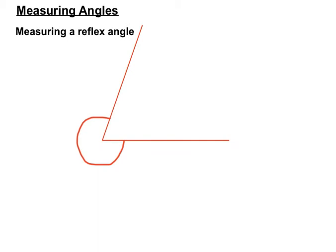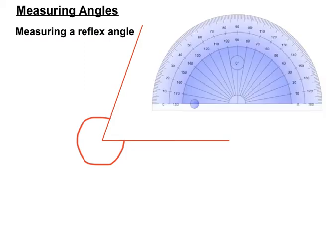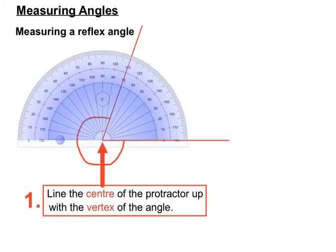Now reflex angles are a little bit trickier. You'll notice here that the marking is all the way around the longer way of the angle. Really there's two angles here, a shorter angle and a longer angle all the way around. So we'll take our protractor, we'll line up the center of the protractor with the vertex of the angle once again.